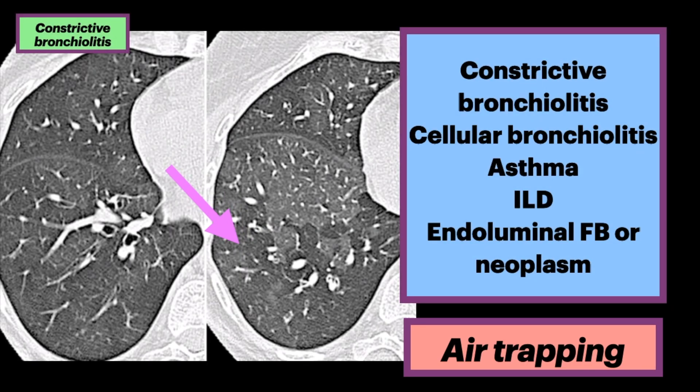Air trapping has many etiologies. First is constrictive bronchiolitis, which is defined as peribronchiolar fibrosis of membranous and respiratory bronchioles. That can include infection, chronic rejection in transplant, connective tissue disease, inhalational lung disease, hypersensitivity pneumonitis, and diffuse idiopathic pulmonary neuroendocrine cell hyperplasia.